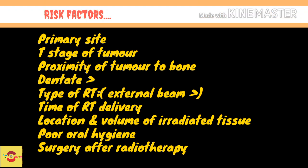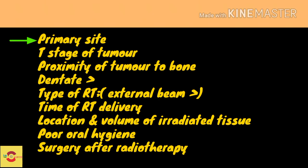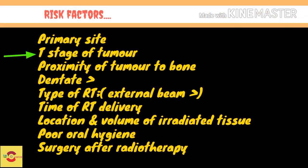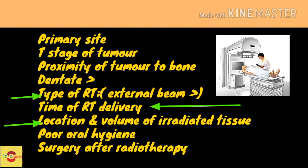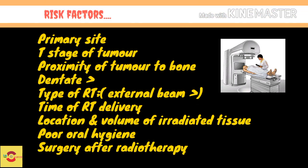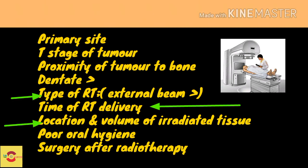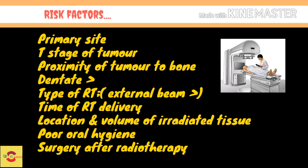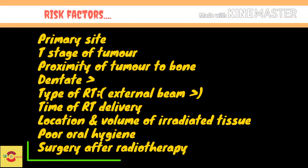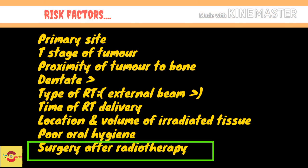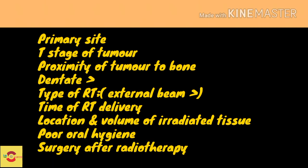The site can be the primary site that receives radiation. The T-stage of malignancy is also a risk factor, as is the proximity of the tumor to the bone. Dentition is a factor — dentate patients have a higher risk of ORN. The type of treatment, whether external beam radiotherapy or brachytherapy, and the timing of radiation dose delivery are relevant. Fractionation decreases the risk of ORN. Other factors include mode of delivery, location and volume of irradiated tissue, inadequate oral hygiene, and surgery resulting in reduction of blood supply to the tissues.